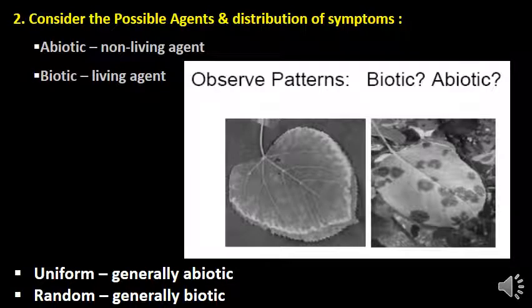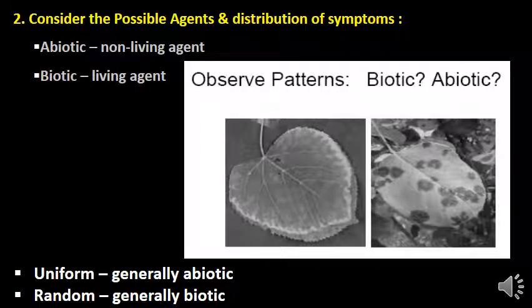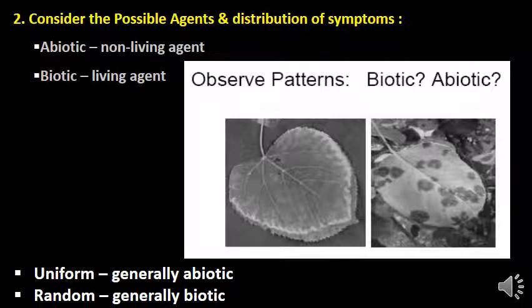The second step in field diagnosis is knowing the distribution of symptoms on the infected plant. Often plant pathologists depend on symptoms for identification of a disease problem, but the use of symptoms alone is often insufficient because similar symptoms can be produced in response to different causal agents — for example, some herbicides can cause leaf distortion which may be confused with viral disease. Abiotic agents, meaning non-living agents, tend to produce a uniform pattern on an individual plant and also observed uniformly over a large area.